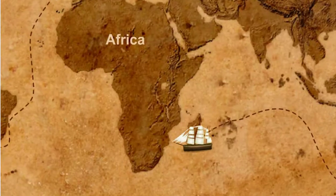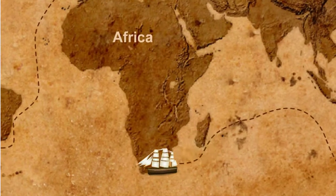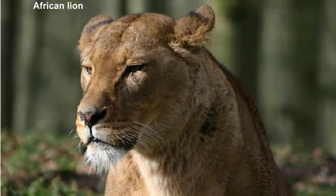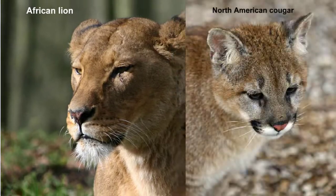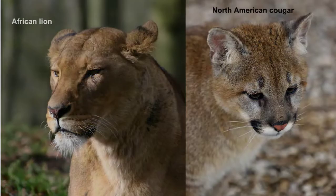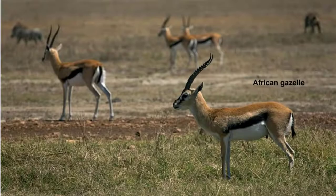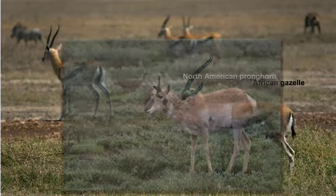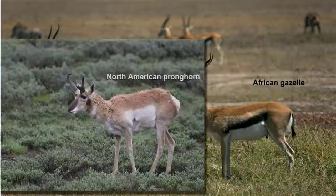Darwin noted that organisms living in Africa were different than those living in other parts of the world. Even when two species lived in similar environments, such as a desert, there were still differences. Darwin wondered why these differences existed between species.